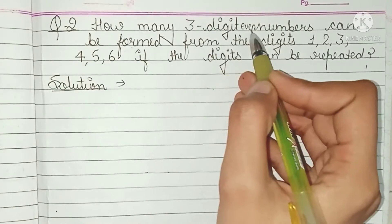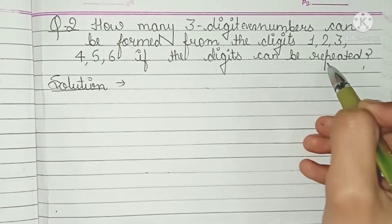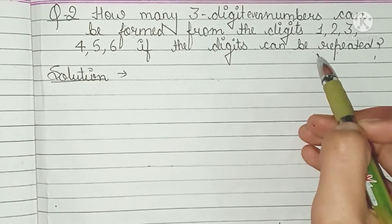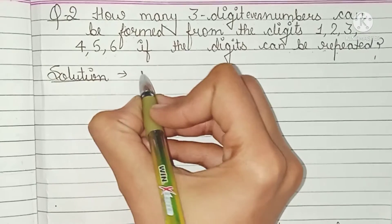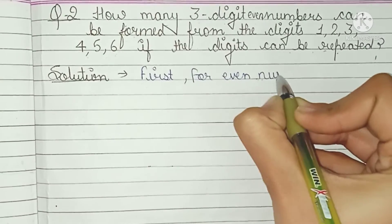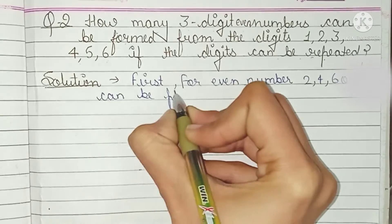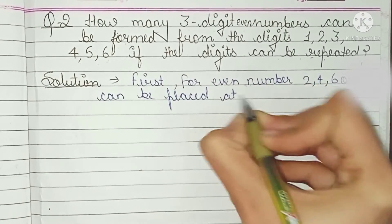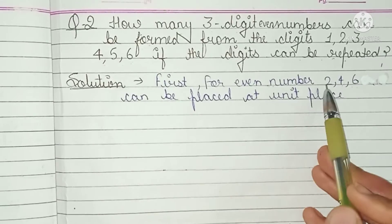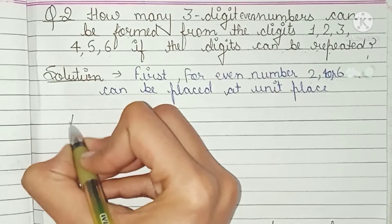Question number 2: How many 3-digit even numbers can be formed from the digits 1, 2, 3, 4, 5, 6 if the digits can be repeated? Aapko batana hai kitne 3-digit even numbers ban sakte hain. Firstly check karein — even numbers jinhe unit place pe rakhna hoga — 2, 4, 6 — ye 3 hi even numbers hain jo 1 to 6 ke beech mein hain.